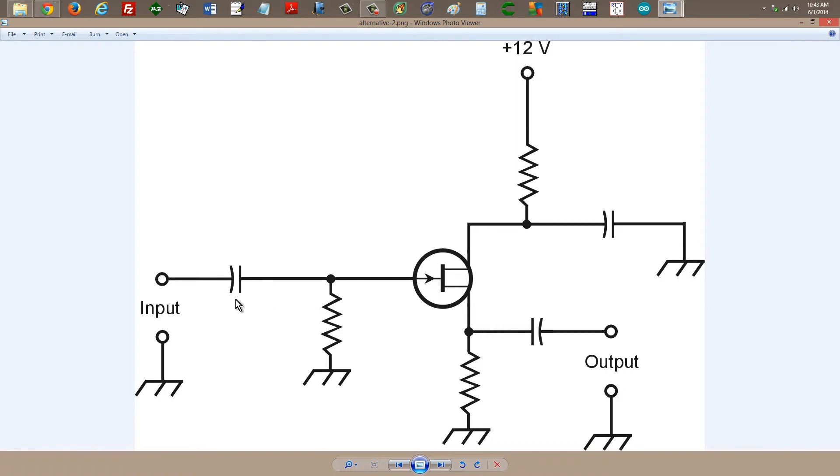This would serve as a blocking capacitor to isolate the input from the ground. So this is the way that you normally would bias a junction field effect transistor, an n-channel junction field effect transistor for class A operation. Just like the emitter follower, you take the output from the source rather than from the drain.